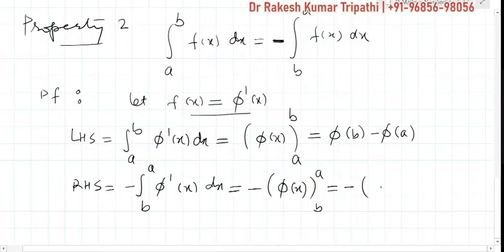On calculating it, it is minus bracket φ(a) minus φ(b), which is equal to φ(b) minus φ(a).